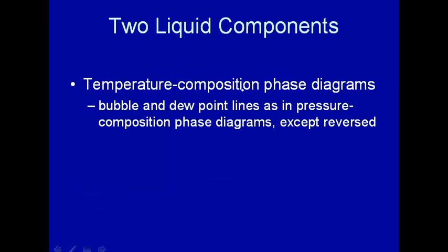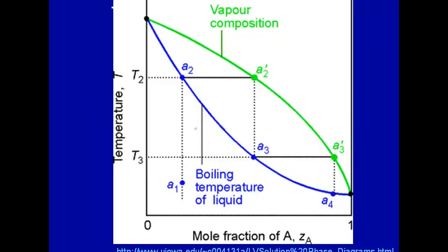So essentially a temperature composition phase diagram is just like a pressure composition phase diagram, except that the bubble and dew points are switched. So let's take a look here, this is a typical temperature composition phase diagram. Temperature here is along the y-axis, composition is along the x-axis.